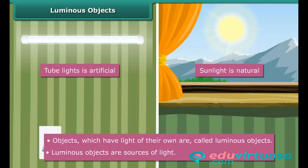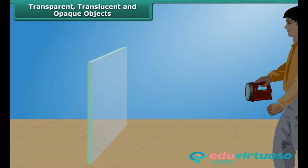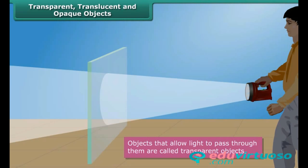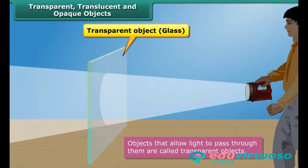Luminous objects are sources of light. Objects are classified as transparent, translucent, or opaque depending upon their treatment of light. Objects that allow light to pass through them are called transparent objects. Most of the light falling upon a transparent object passes through it to the other side, thereby allowing us to see through them. Glass, clean air, and pure water are examples of transparent objects.